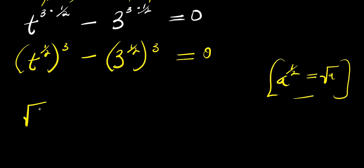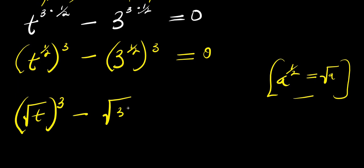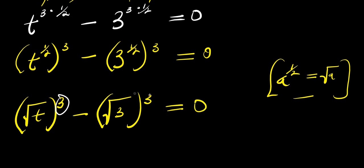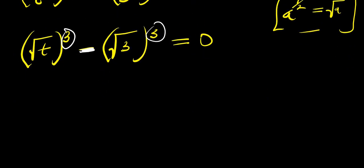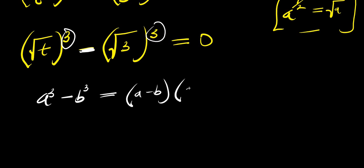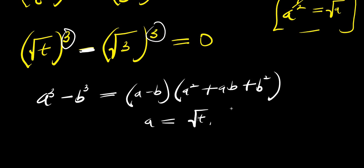So that means this is square root of t raised to the power of three, minus square root of three raised to the power of three, equals zero. This is power three and this is power three, so we can expand using the identity: a cubed minus b cubed equals a minus b times a squared plus ab plus b squared.